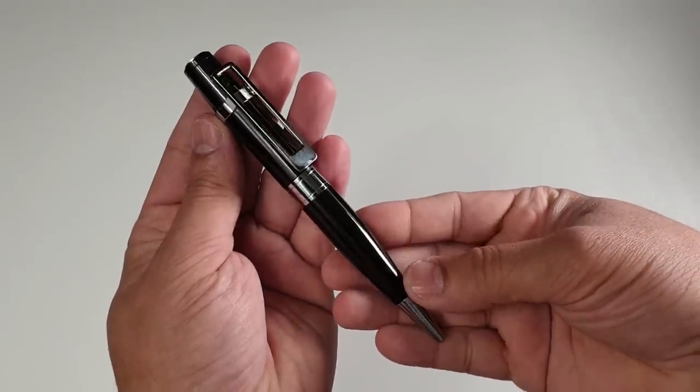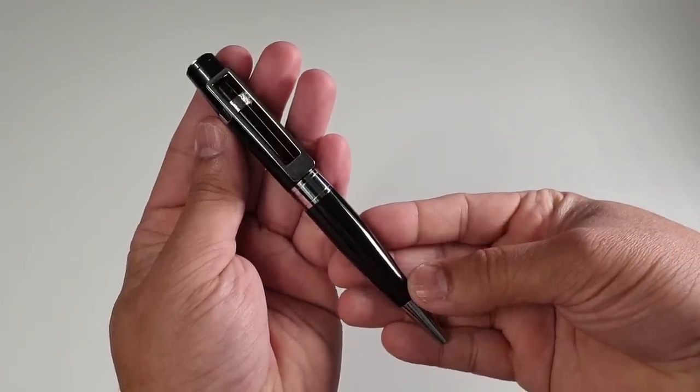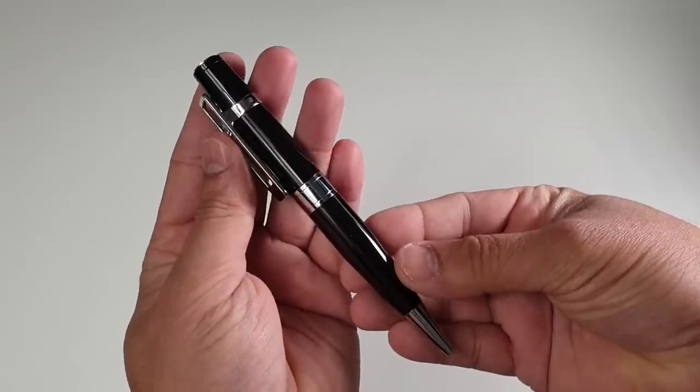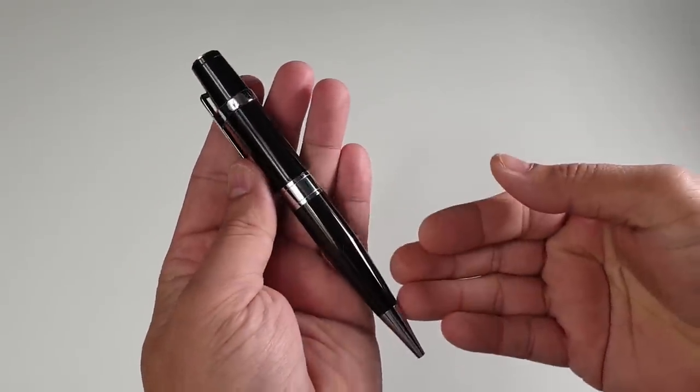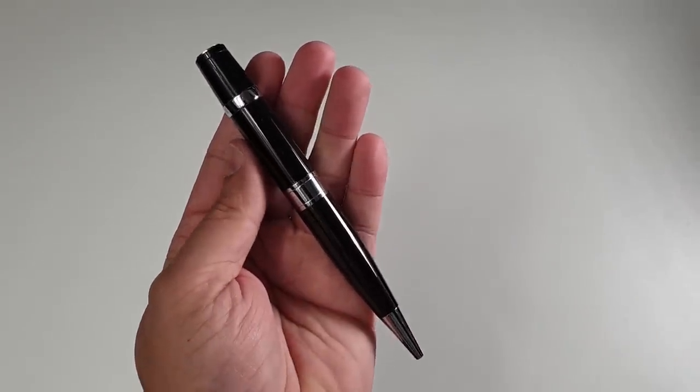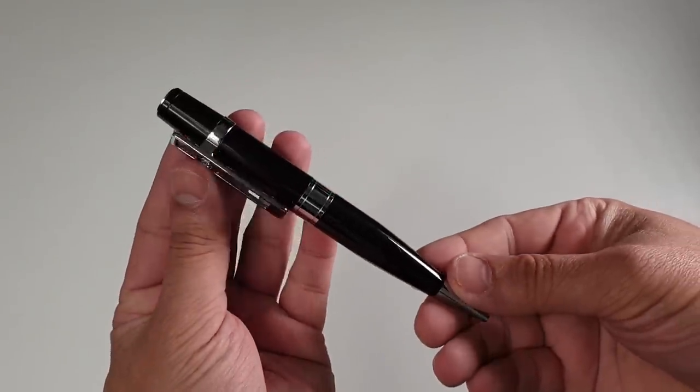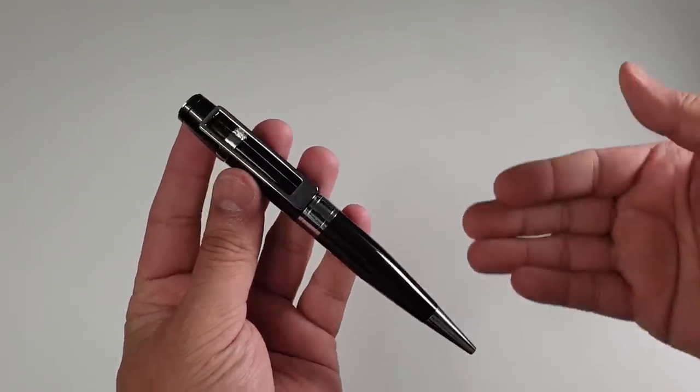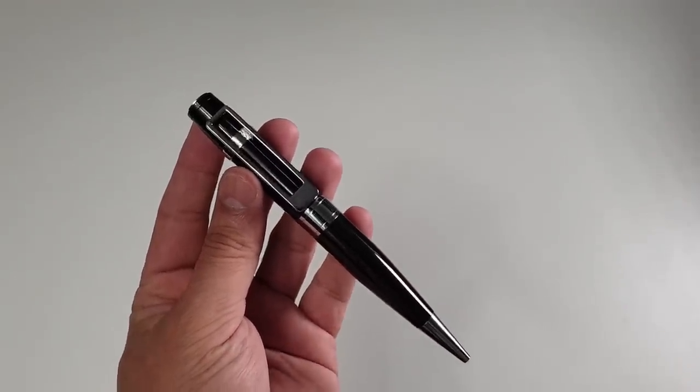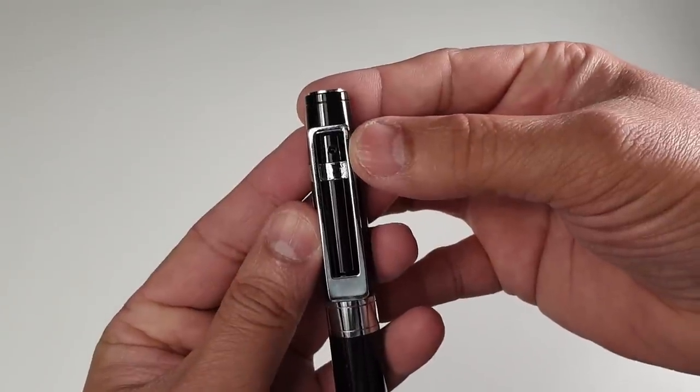Last but not least, we have our spy pen. In terms of its design, it's all fantastic metal design with the black color around it as well as chrome rims which makes it more elegant in terms of its looks and less likely to feel that it's a spy pen.